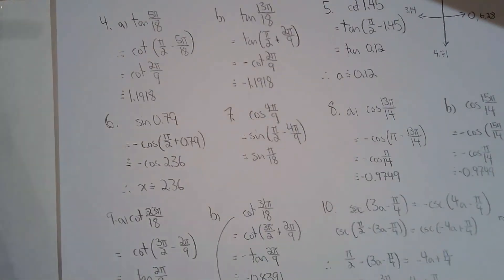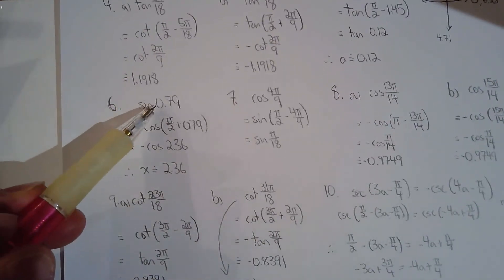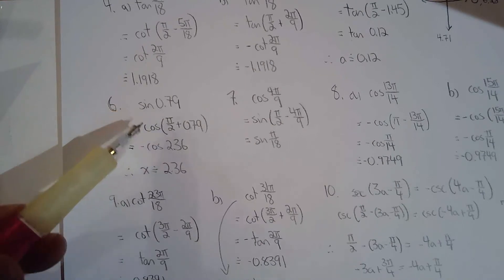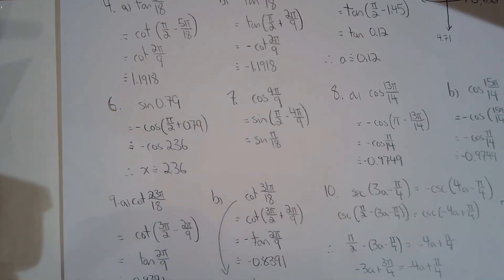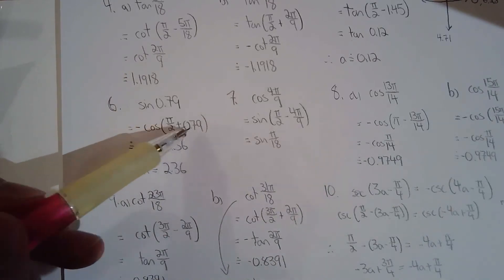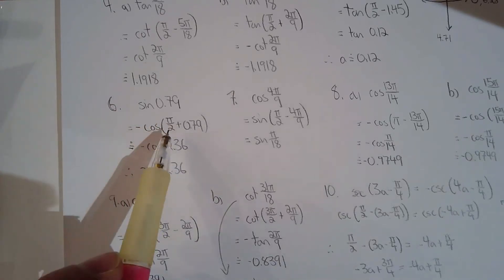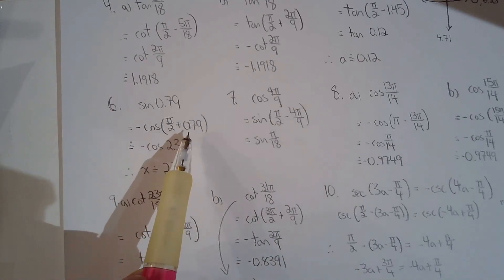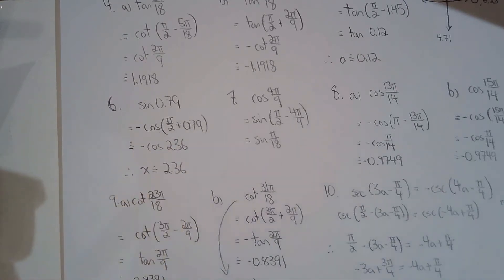For number 6, cos(x) = sin(0.79) but x is in the second quadrant. I use the identity that pushes from the first quadrant to the second quadrant while switching to the complementary trig function. Since we want the angle between the terminal arm and the y-axis to be 0.79 with the angle in the second quadrant, x = π/2 + 0.79 ≈ 2.36.